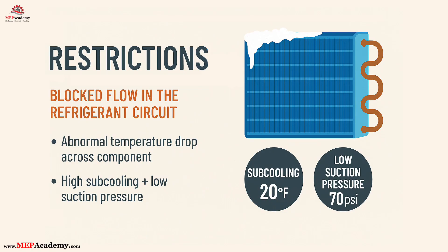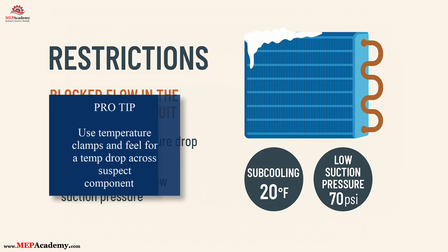In an R32 system, for example, high sub-cooling such as 20°F or more, combined with low suction pressure like 80 PSI or lower — when 120 to 135 PSI would be normal — typically indicates a restriction in the liquid line, such as a clogged filter dryer or TXV, causing liquid refrigerant to back up before the restriction and starving the evaporator. Pro tip: use temperature clamps and feel for a temp drop across suspect components.